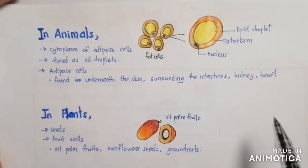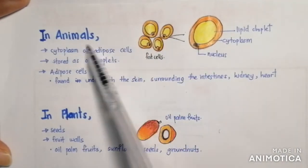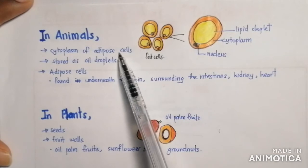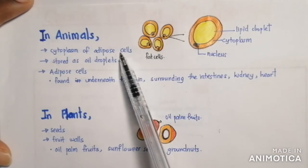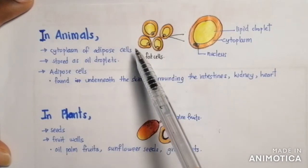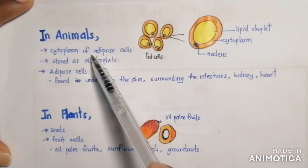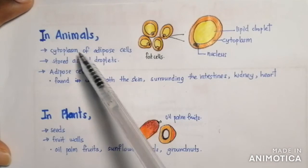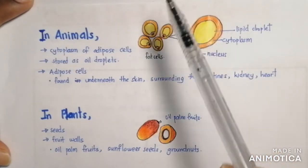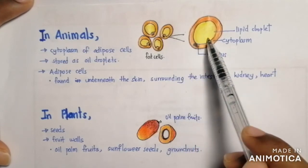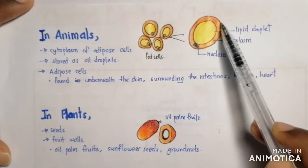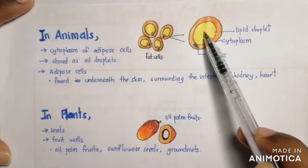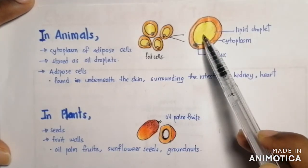The distribution of triglycerides in animals is in the cytoplasm of adipose cells. Adipose cells are fat cells found in the body — essentially body fat cells. Triglycerides are stored as oil droplets in the cytoplasm of the fat cell. If we zoom into the fat cell, we can see the nucleus, the cytoplasm, and the lipid droplet where triglycerides are stored.